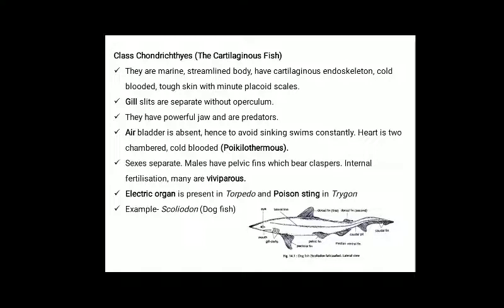Class Chondrichthyes — cartilaginous fishes: they are marine with streamlined body, have cartilaginous endoskeleton and are cold-blooded. Gill slits are separate without operculum. They have powerful jaws and are predators. Air bladder is absent. Sexes are separate. They are viviparous in nature. Example: Scoliodon (dogfish).